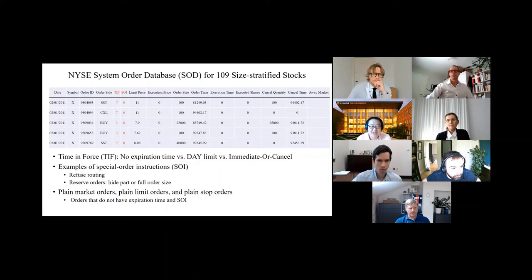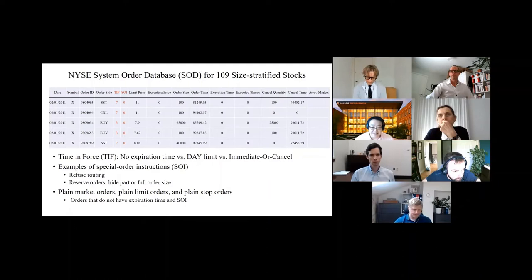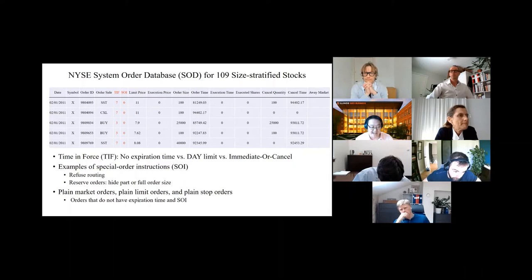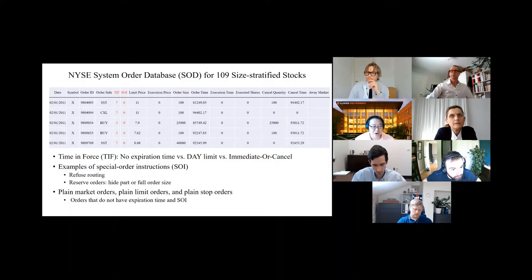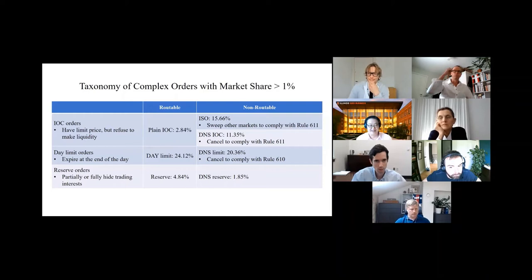How can we identify order types? We get a unique proprietary dataset which has complex order types, called System Order Database. You can identify tens of order types using two indicators. First, they're different in time in force. Some orders do not have expiration time. There are daily orders and immediate or cancel orders. The second column is special order instructions. There are two main purposes: refuse routing and hide part or full of your order size. What we are familiar with are market and limit orders, which are orders without any further instructions. They are such a tiny fraction of the market. We call them plain market order, plain limit order, and plain stop orders.